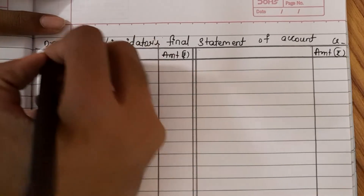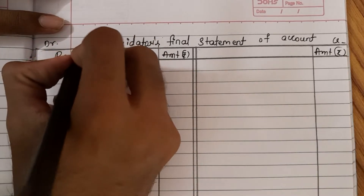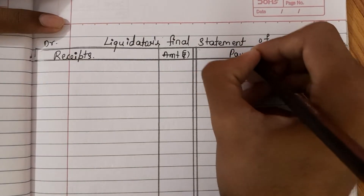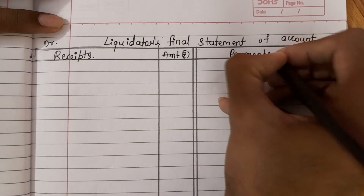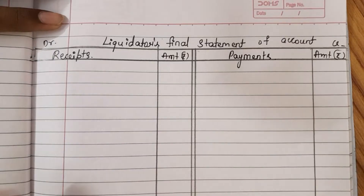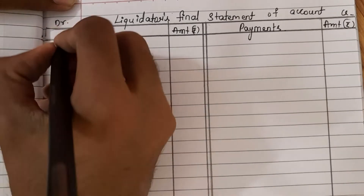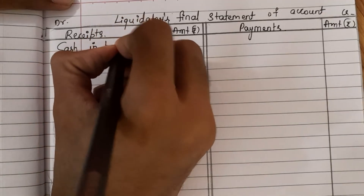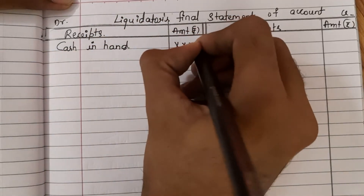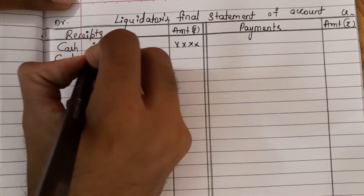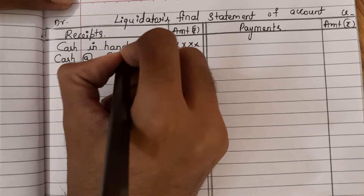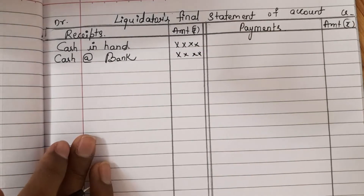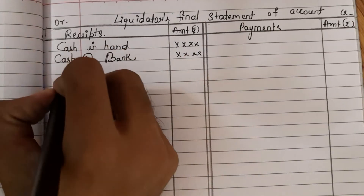This account we will have to prepare throughout this chapter — it is a very easy and very important chapter. Please concentrate and watch all my videos. On the debit side, we will enter all the receipts, and on the credit side, we enter all the payments. Receipts means whatever the company should receive — first we enter cash in hand, then cash at bank, which the company would have kept in the bank.